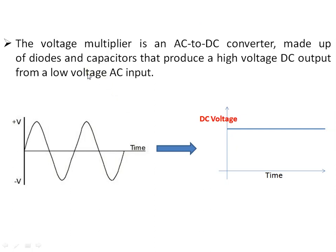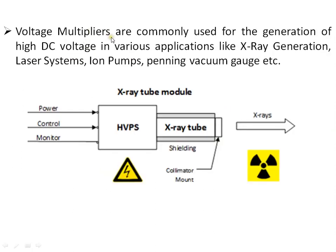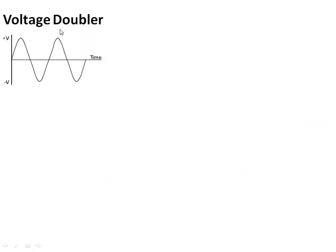The high voltage DC value depends upon the number of diodes and capacitors present in the voltage multiplier. Voltage multipliers are commonly used for the generation of high DC voltage in various applications like x-ray generation, laser systems, ion pumps, magnetron tubes, vacuum gauges, and many other applications requiring high DC voltage.